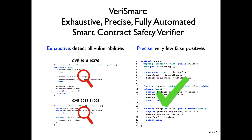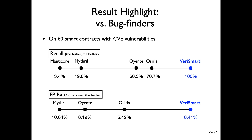In this work, we propose VarySmart: an exhaustive, precise, and fully automated smart contract safety verifier. VarySmart is a new verifier that fundamentally overcomes the shortcomings of existing approaches. Since VarySmart performs exhaustive verification, it can find all vulnerabilities. In addition, VarySmart is highly precise, meaning it produces very few false positives. In the experiment with bug finders on 60 smart contracts with CVE vulnerabilities, VarySmart detected all known CVE vulnerabilities with a very low false positive rate. By contrast, existing verifiers missed many known critical vulnerabilities with a higher false positive rate.